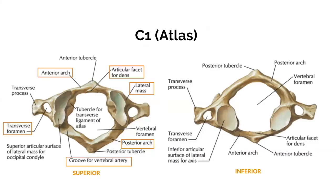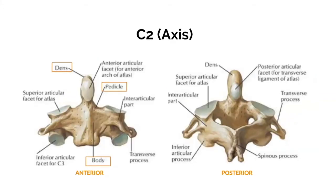Reviewing relevant anatomy — I've highlighted relevant areas in orange boxes. This is C1, also known as the atlas. Note the anterior arch, the posterior arch, the articular facet for the dens, the lateral masses that articulate with the occipital condyles on the skull, the transverse foramen where the vertebral artery courses through, and the groove for the vertebral artery as it goes up into the posterior skull. These are superior and inferior views.